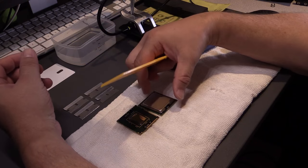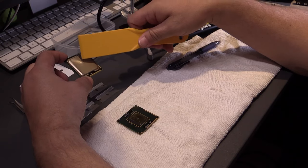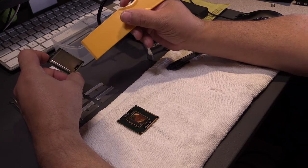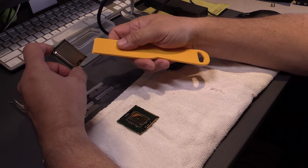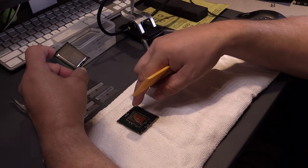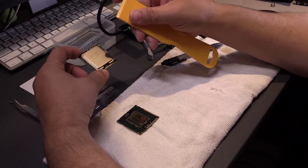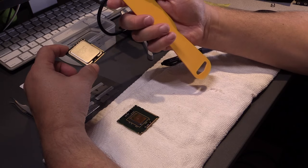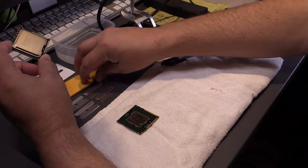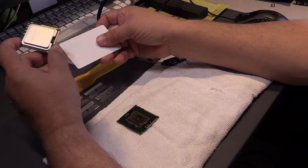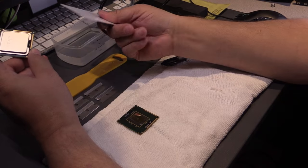This is a putty knife I picked up at the auto parts store for Bondo, but this is like a dollar. This is to, once we remove the solder from the integrated heat spreader, scrape as much as you can off the top of the die. You don't want to use any metal whatsoever. A plastic putty knife or an old card will work as well.